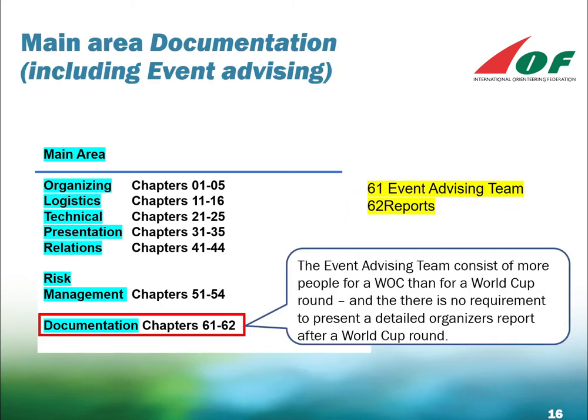Finally, the Documentation section — Chapters 61–62 — covers the event advising team that supports the organiser and the reports written after the events. As you can see in the text, the event advising team consists of more people for a World Cup round, and there is no requirement to present a detailed organiser's report after a World Cup round.